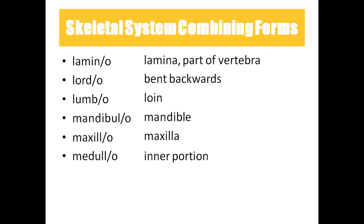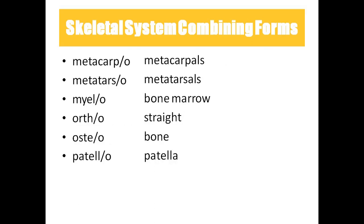'Medullo' means inner portion, while cortex means outer portion. 'Metacarpal' means palm — the bones of the hand are called metacarpals. 'Metatarsals' means foot bones. 'Myelo' is bone marrow — osteomyelitis involves bone marrow. 'Myelo' alone can also refer to the spinal cord. 'Ortho' means straight. 'Osteo' means bone, so osteology is the study of bones.